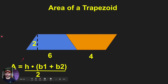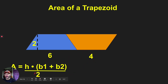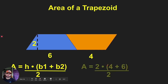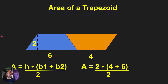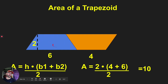The area of a trapezoid equals height times the quantity base one plus base two, divided by two. Height times base one plus base two gives us the whole parallelogram, but we just want half, so we divide by two. In this case: two times the quantity four plus six equals two times ten equals twenty, divided by two equals ten. The area of this blue trapezoid is ten.